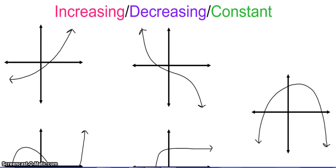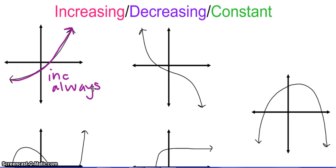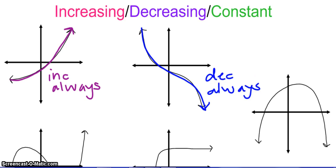So looking at these five graphs, we need to identify intervals of increasing, decreasing, or constant. Reading from left to right, this first graph is going up — it is creating a positive slope, a positive rate of change — so we're going to say that this function is increasing always. Looking at this next function, as we read from left to right, our graph is always going down, so we're going to say decreasing always.